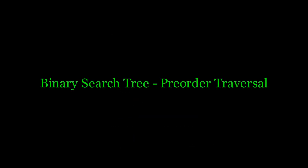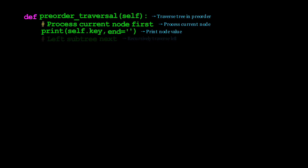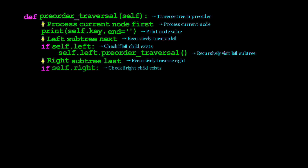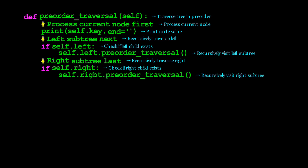Now let's look at the code for pre-order traversal. This method is recursive and follows root, left, right order. The method starts by processing the current node first — we print the value of the node before visiting its children. Next we check if the node has a left child; if so, we recursively call the pre-order traversal for the left subtree. This ensures we explore the entire left subtree before moving to the right. Finally, we check if the node has a right child, and if so, we recursively call the pre-order traversal for the right subtree.